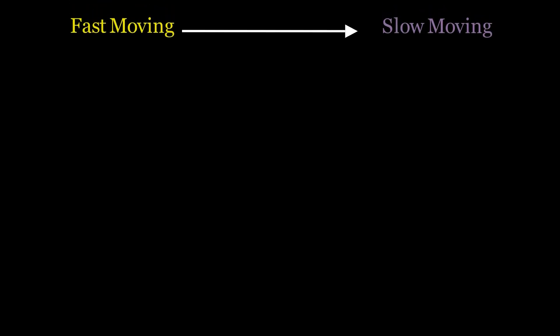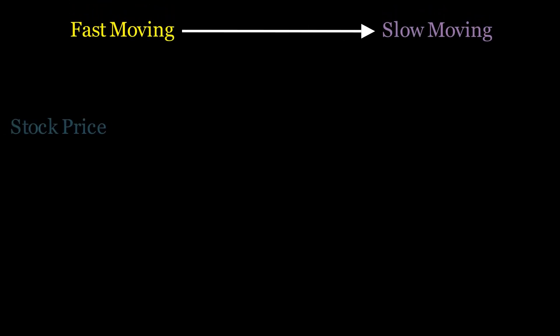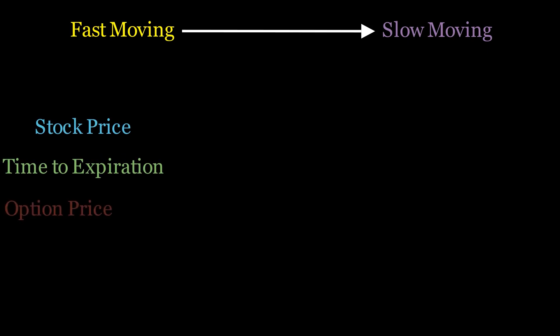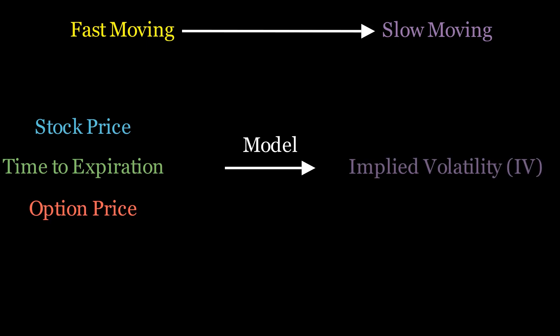That's where a model becomes a game changer. It simplifies all this complexity by expressing those fast-moving prices in terms of slower-changing factors, like implied volatility and the Greeks, which allow for easy comparison between all the different contracts.